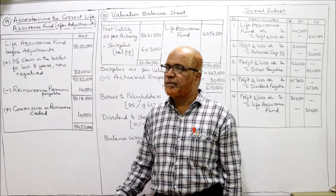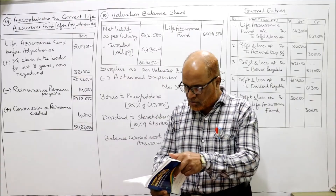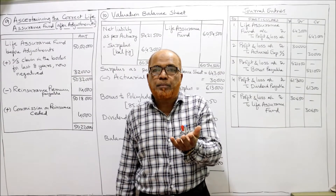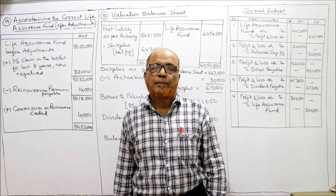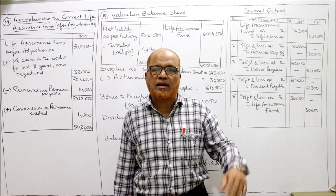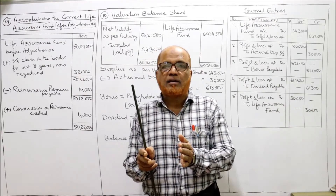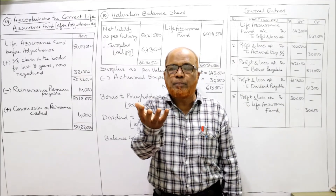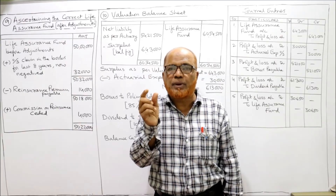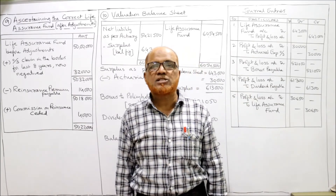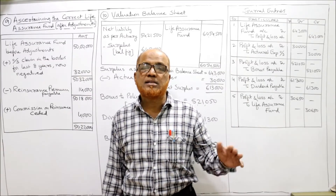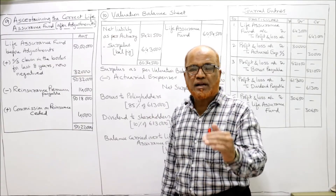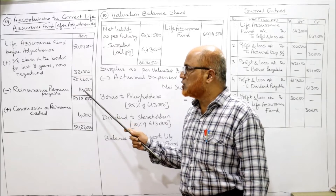Adjustment C: Re-insurance premium ₹14,000 and commission on it ₹4,000. In case of re-insurance premium, the premium is payable to the other insurer. For example, ABC company has made re-insurance with XYZ company — giving the business to XYZ. Whatever premium ABC company receives, some premium under re-insurance will be paid to XYZ. This is called re-insurance premium. It is an expenditure, so re-insurance premium will be deducted from the fund. From ₹50,32,000 minus ₹14,000 leaves ₹50,18,000.